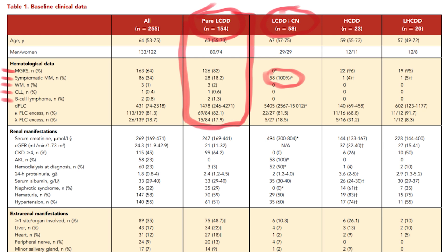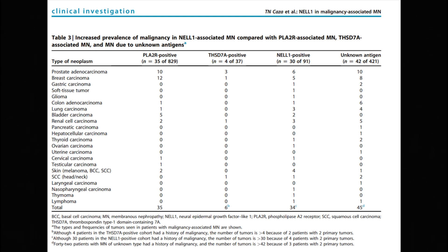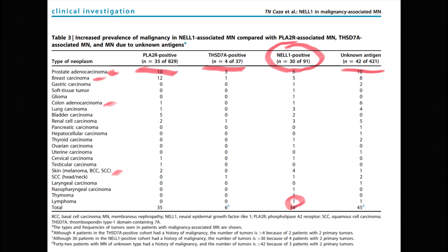Could the NELL1-positive membranous glomerulopathy also be secondary to the patient's CLL? A paper by Tiffany Caza et al. showed that one third of patients with NELL1-positive associated membranous glomerulopathy had a history of malignancy. Looking at 91 cases, 30 patients had an associated malignancy, including prostate adenocarcinoma, breast, colon, skin, and notably one patient had lymphoma. NELL1-associated membranous glomerulopathy has a much higher incidence of associated malignancy compared to PLA2R, THSD7A, and unknown antigen cases. However, NELL1-associated membranous nephropathy has also been associated with multiple drugs, including lipoic acid supplementation, traditional indigenous medicines, and bucillamine use. A full clinical history review is necessary to rule out other malignancies and supplements that could be causing the NELL1 membranous glomerulopathy.